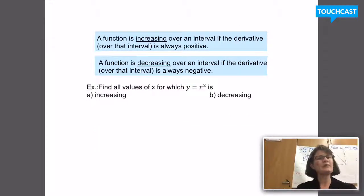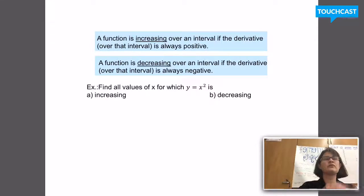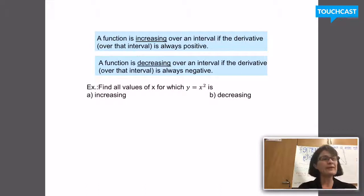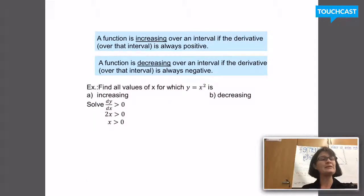Here's our first example: find all the values of x for which y = x² is increasing, and then figure out all the values for which y = x² is decreasing. The way to do this is to think about what we just said — a function is increasing anywhere its derivative is positive. So to answer part a, I'm going to take the derivative: dy/dx = 2x, and solve the inequality dy/dx > 0, which means the derivative is positive.